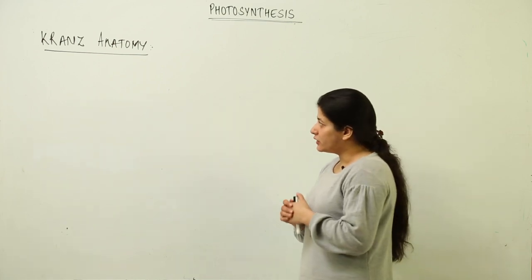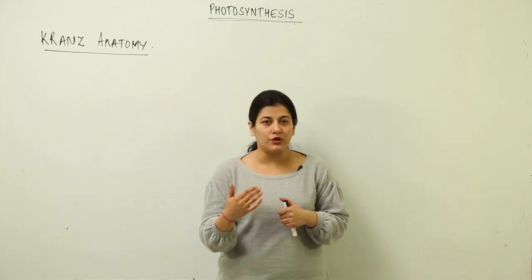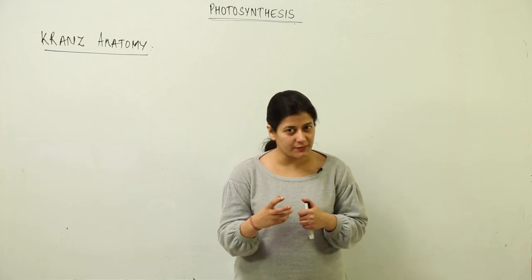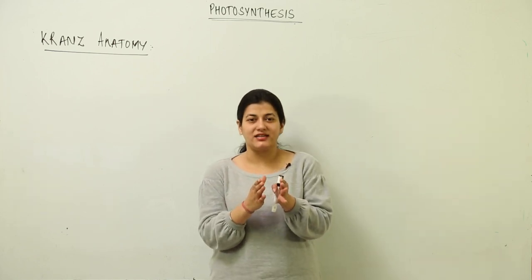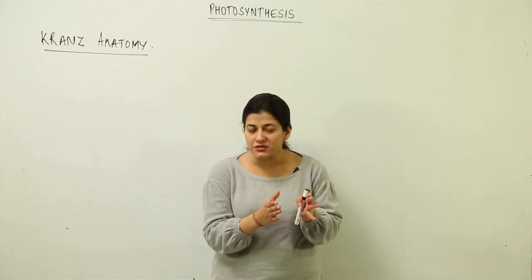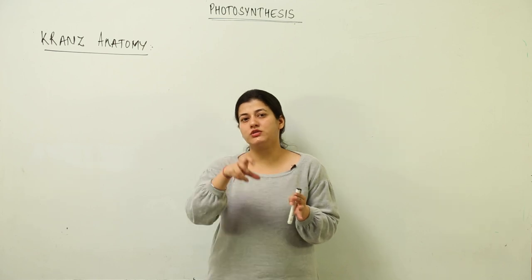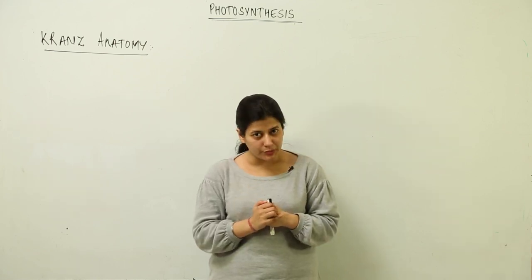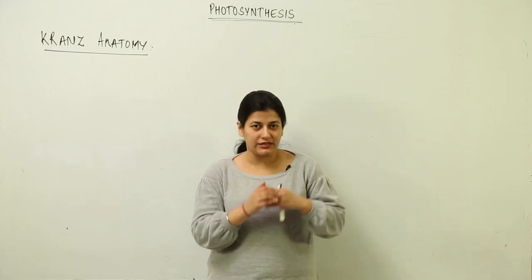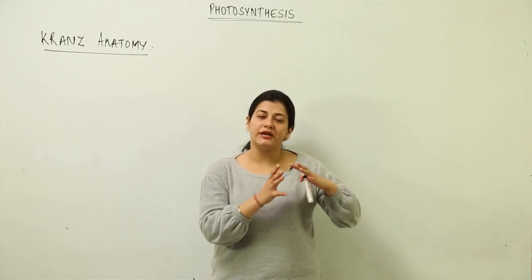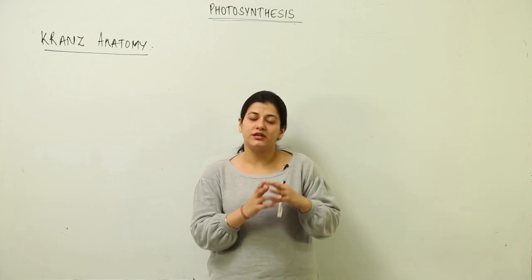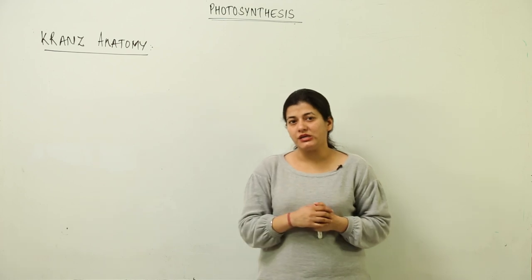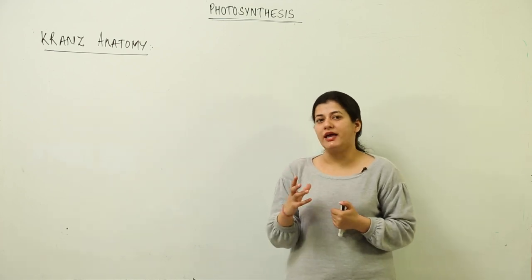After the C3 cycle, we discussed photorespiration, which we termed a wasteful process. In photorespiration, oxygen takes over the activity of Rubisco, leading to a waste of carbon dioxide and a waste of ATP. What we are going to deal with now is a special anatomical difference found in certain plants.